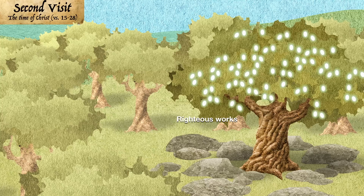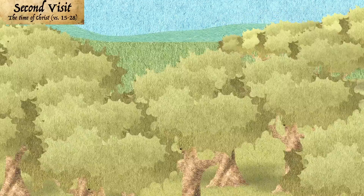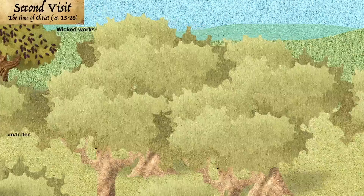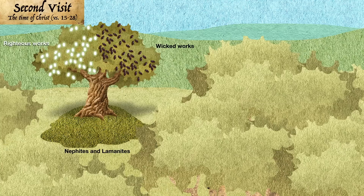Therefore gather it, and lay it up against the season, that I may preserve it unto mine own self. Look hither. And behold, another branch also, which I have planted. Behold, I have nourished it also, and it hath brought forth fruit. Look hither, and behold the last. Behold, this have I planted in a good spot of ground, and I have nourished it this long time. And only a part of the tree hath brought forth tame fruit, and the other part of the tree hath brought forth wild fruit.